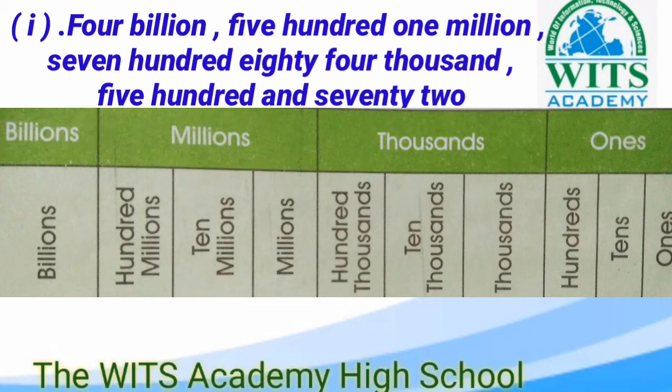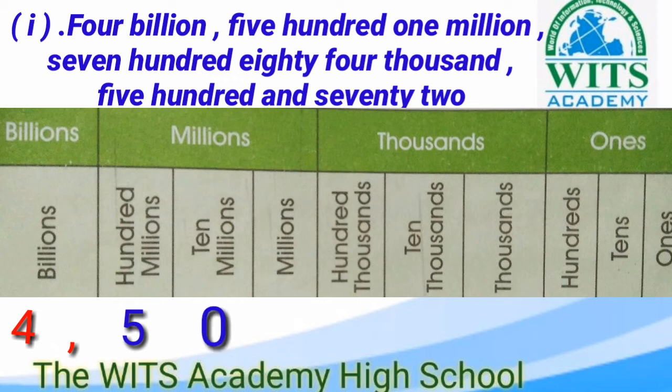अब हम question को write करते हैं। Number one: पहला है four billion — 4 को हम billions के portion में write करेंगे, left side से start करते हैं। उसके बाद five hundred one million है — five hundred million है तो hundred millions के portion में 5 लिखेंगे। Ten millions हमारे पास नहीं है तो वहाँ zero put करेंगे। One million है तो millions के portion में 1 लिखेंगे।